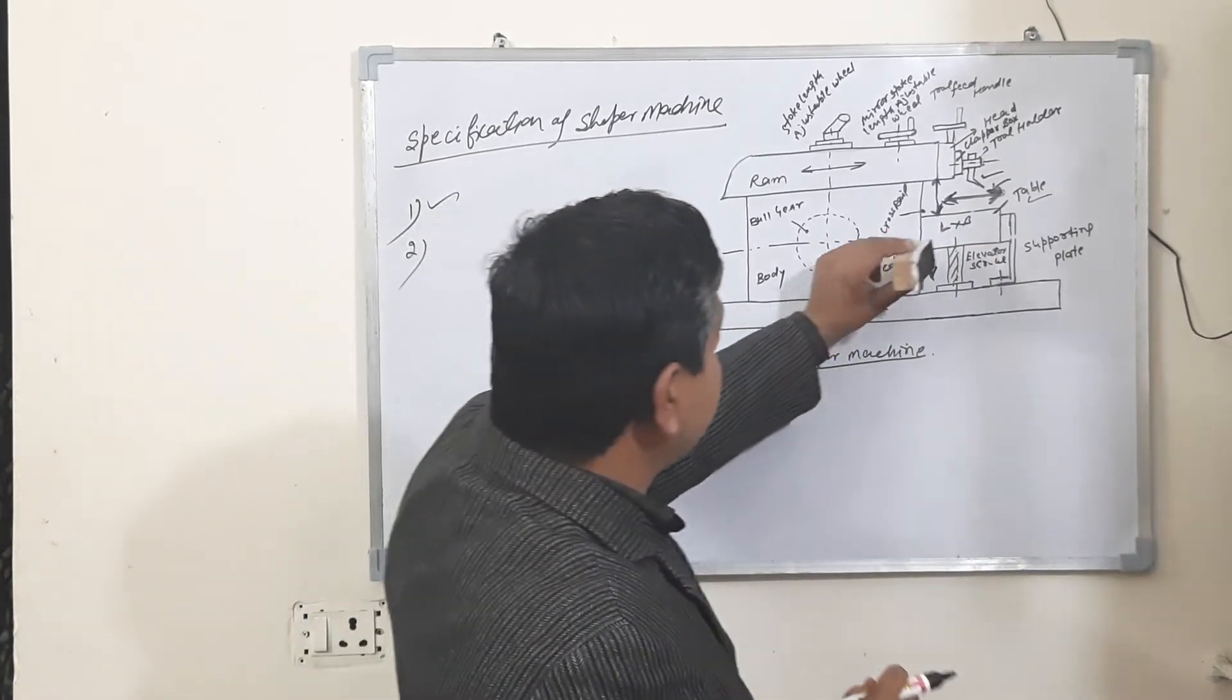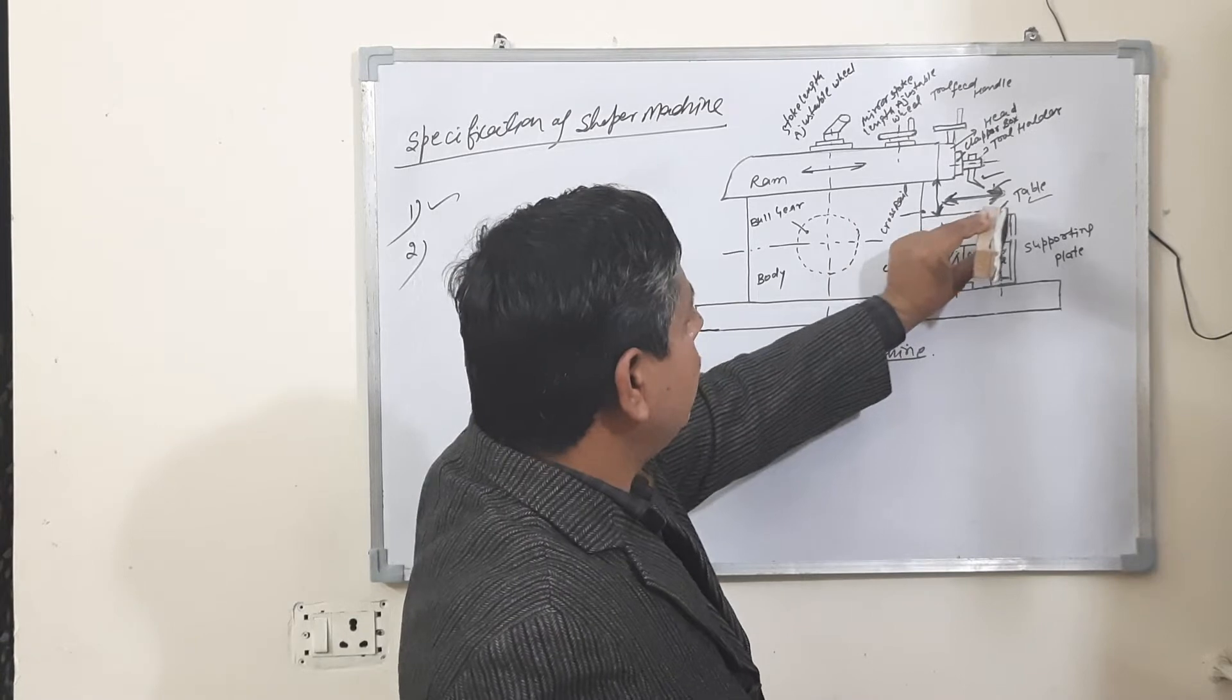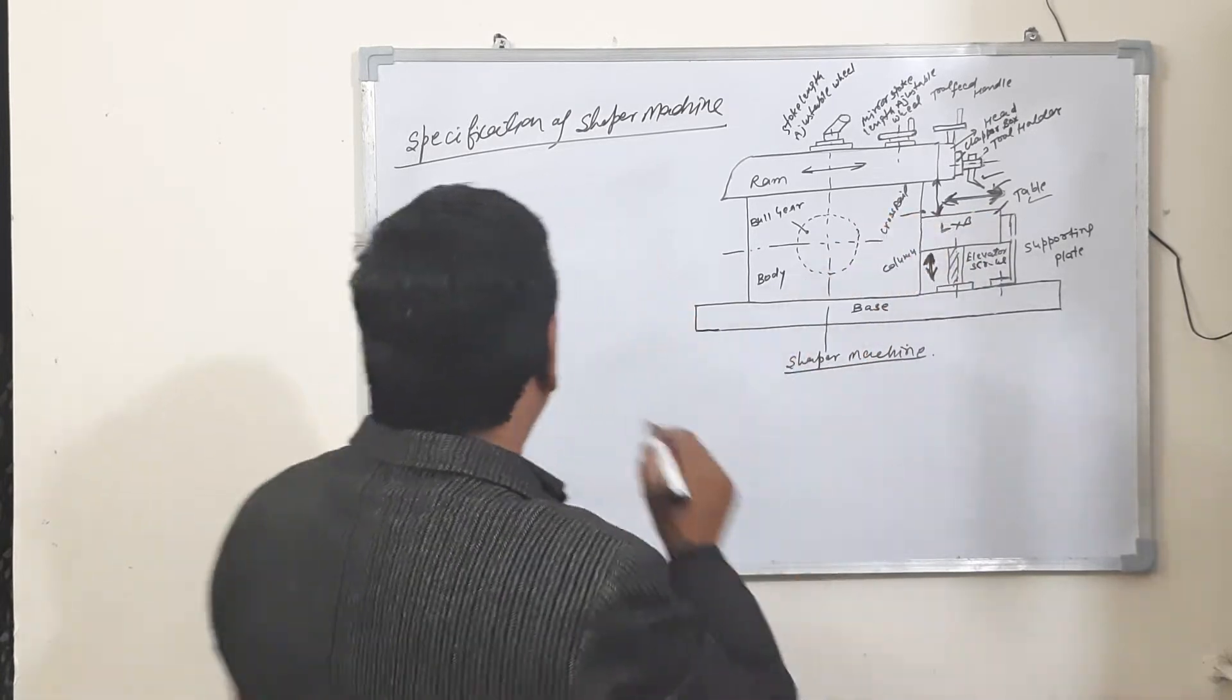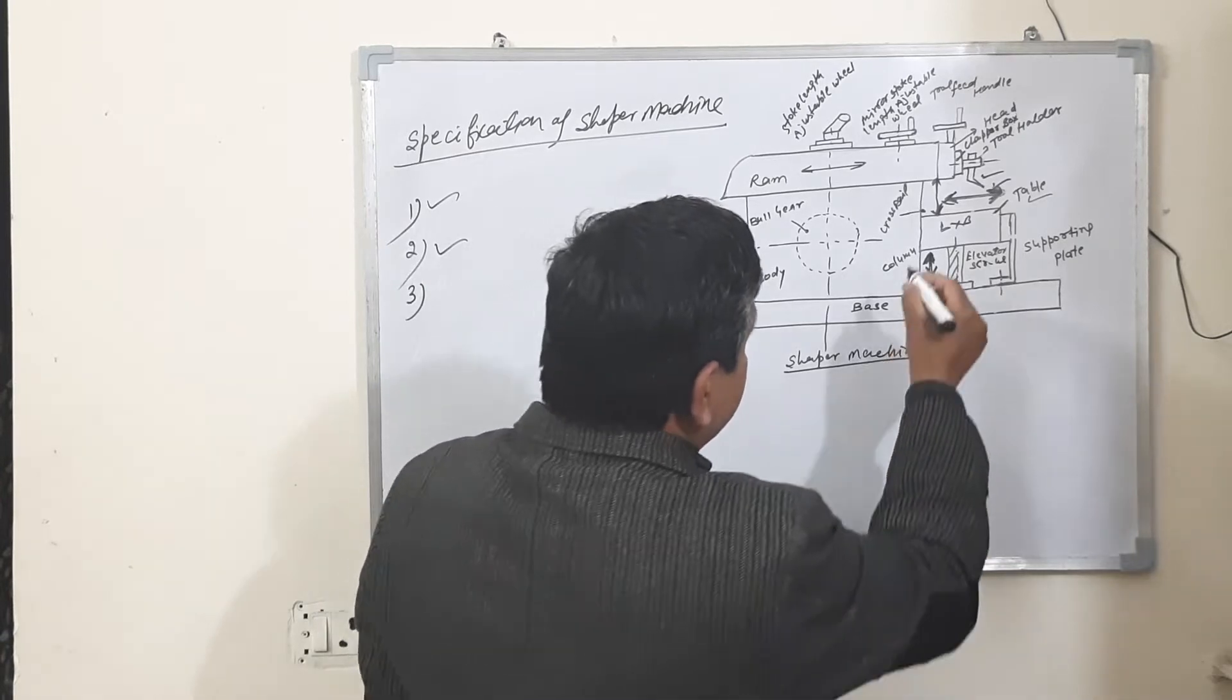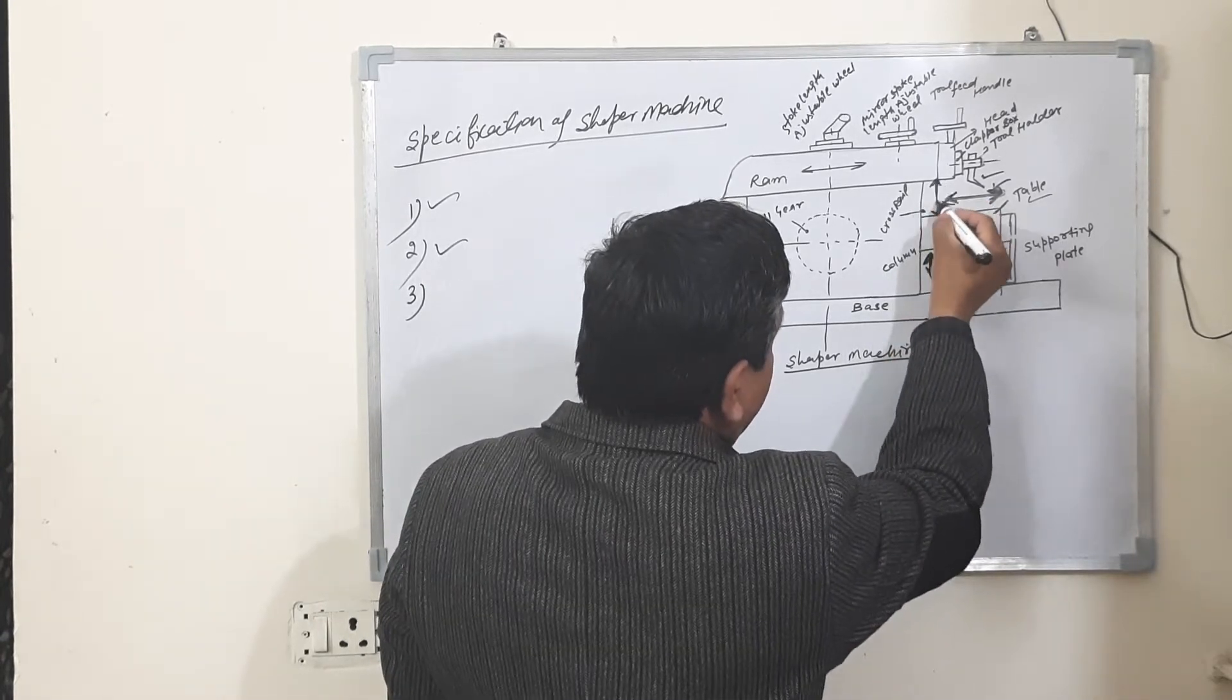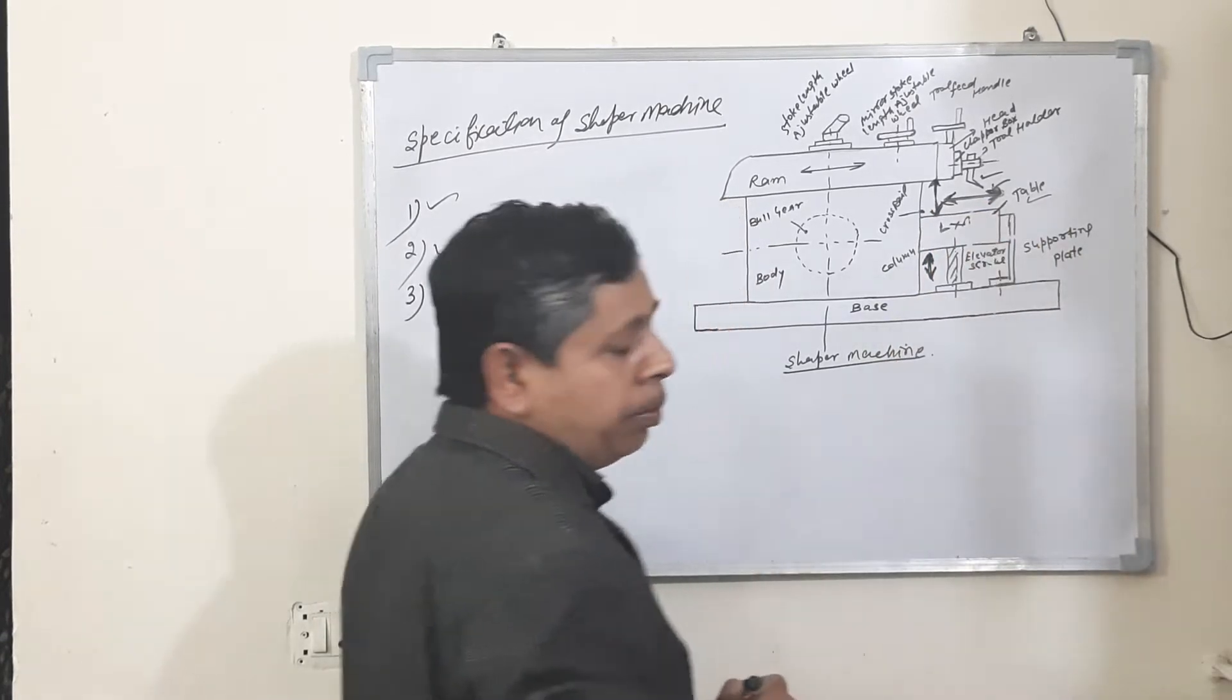Number two: maximum distance traveled by the machine table on the cross rail. Number three: the maximum distance between the head and top portion of the machine table.